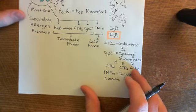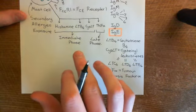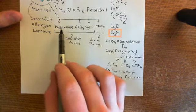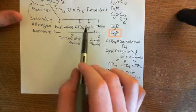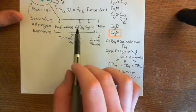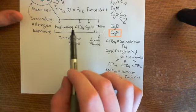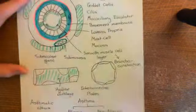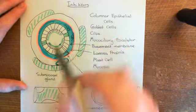Let's start with the immediate phase. These three pro-inflammatory mediators — histamine, leukotriene B4, and the cysteinyl leukotrienes — have been released into the lamina propria. They will diffuse back and act on the smooth muscle cells surrounding the lamina propria. Specifically, histamine and the cysteinyl leukotrienes are going to act on bronchial smooth muscle cells.